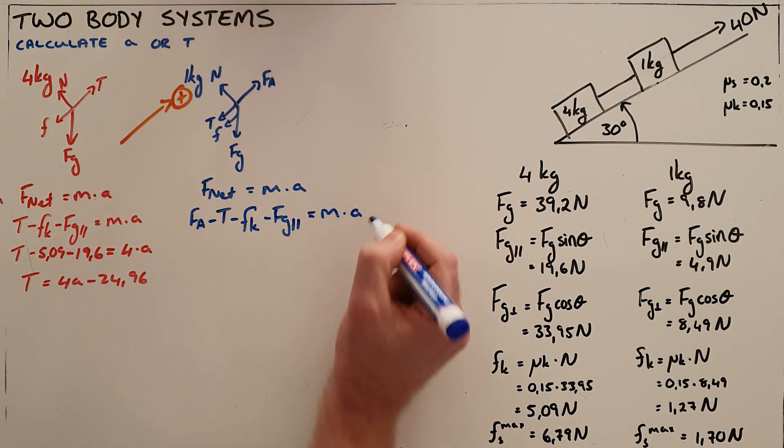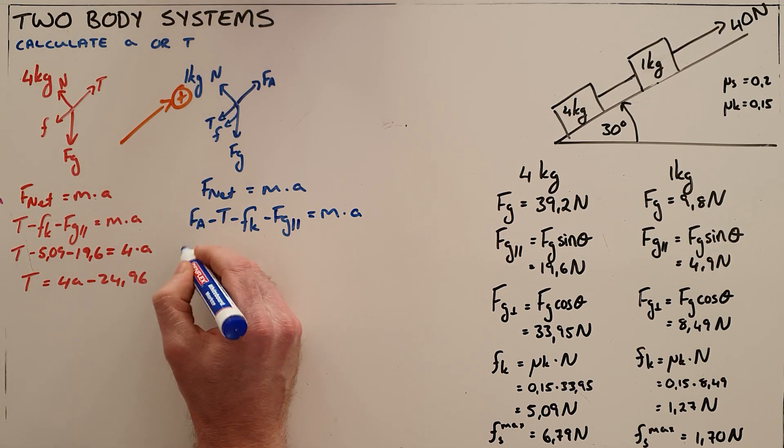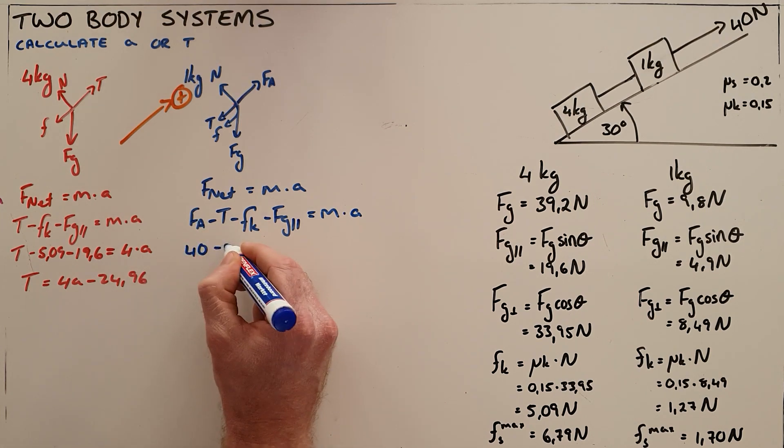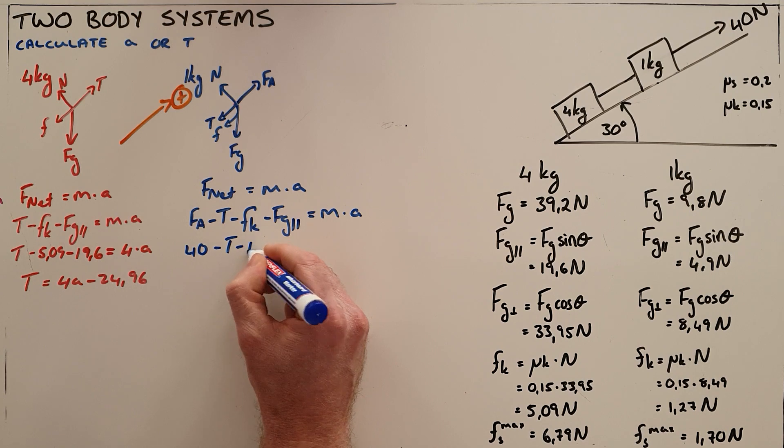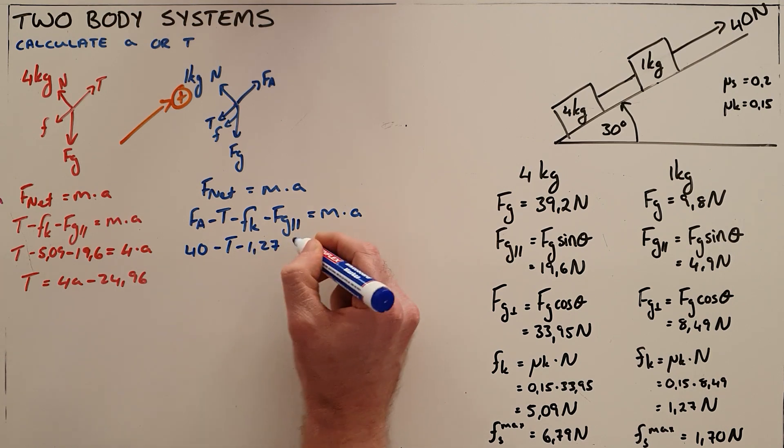Once again substituting in the values that we have been given: 40 for the applied force, tension is still unknown, kinetic friction 1.27, the parallel component of gravity 4.9.